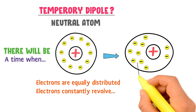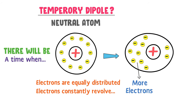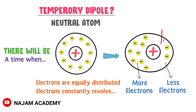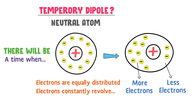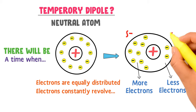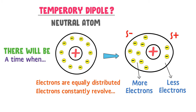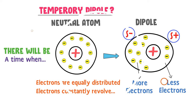At one side of the atom there are more electrons, and at the other side of the atom there are less electrons — or you can say that this side is electron deficient. As a result, this side becomes partially negative because it contains more electrons, and this side becomes partially positive because it contains less electrons. Now this atom is a dipole because it has two poles: a positive pole and a negative pole.